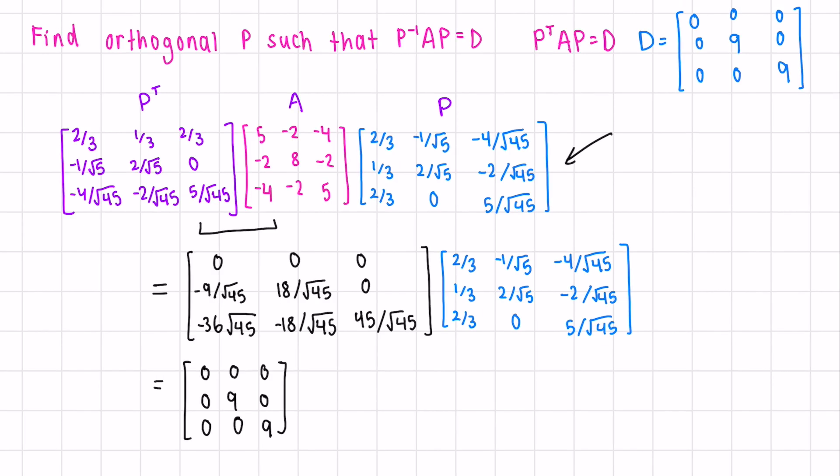Remember that in order for P to be orthogonal, we need to have orthonormal rows and columns.